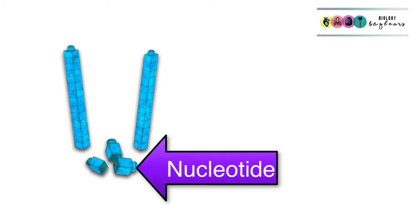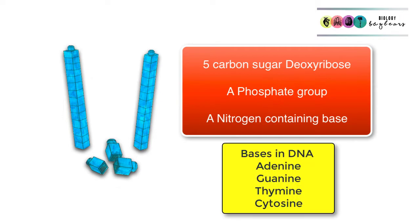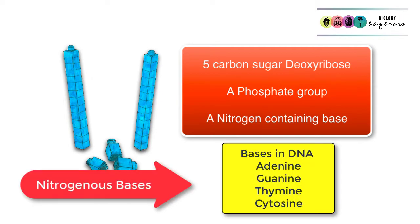A nucleotide in DNA is a molecule that consists of three parts: the five carbon sugar deoxyribose, a phosphate group, and a nitrogen containing base. The base can either be adenine, guanine, thymine, or cytosine.